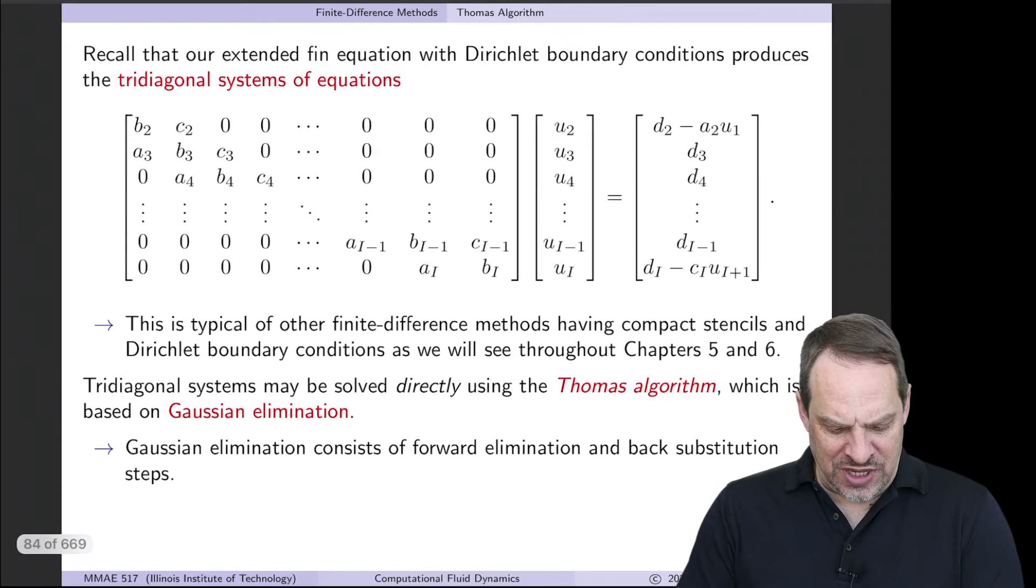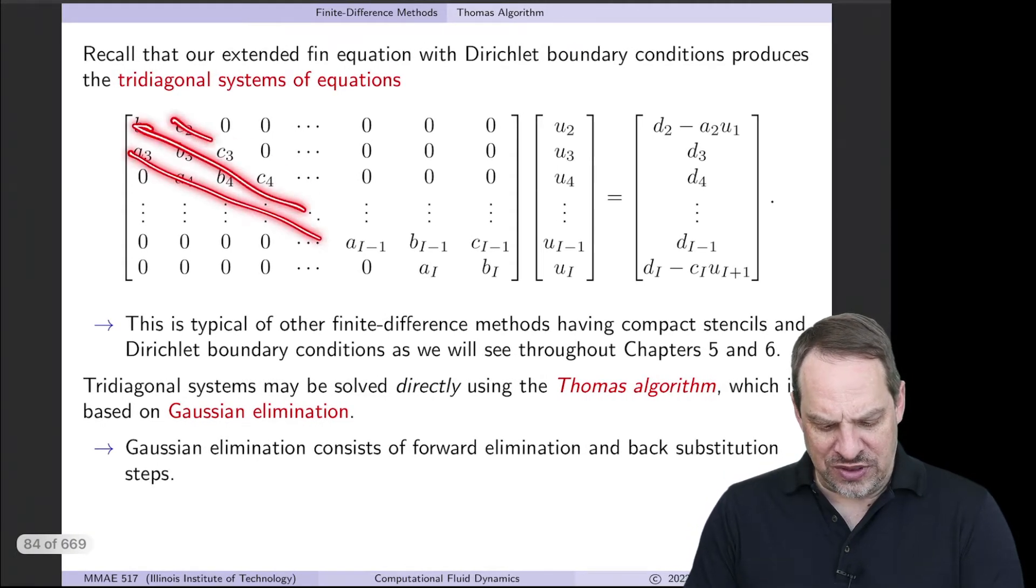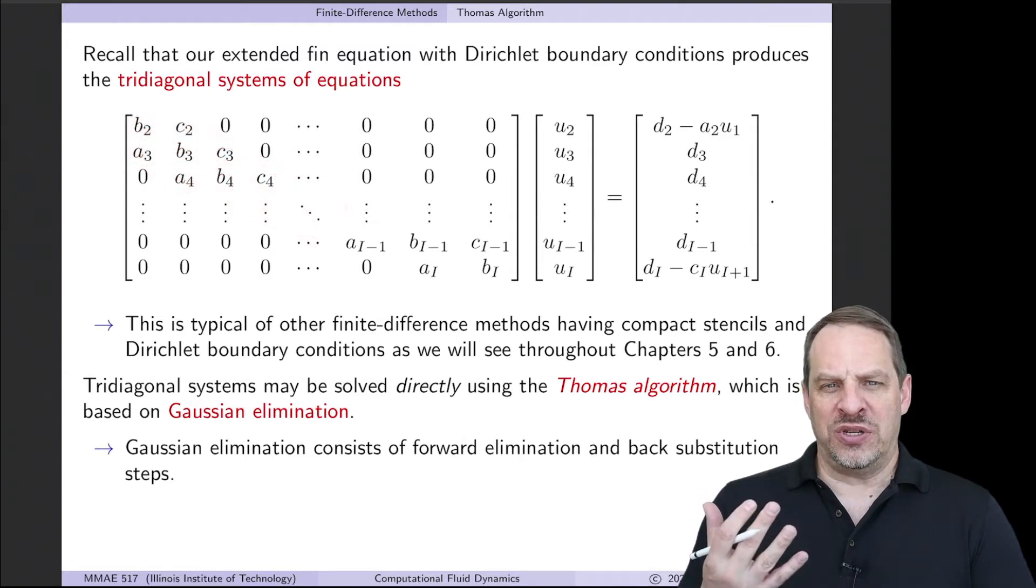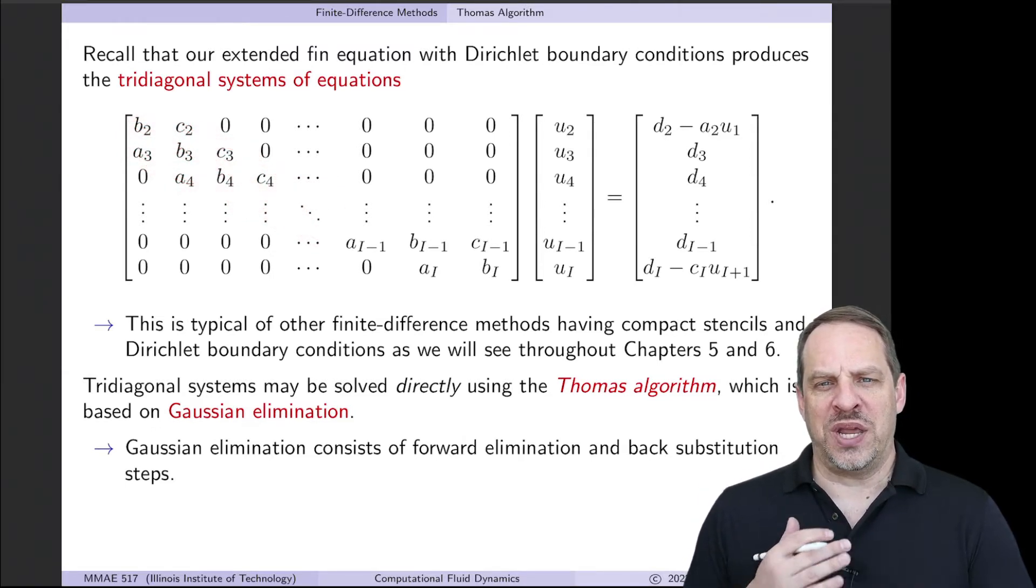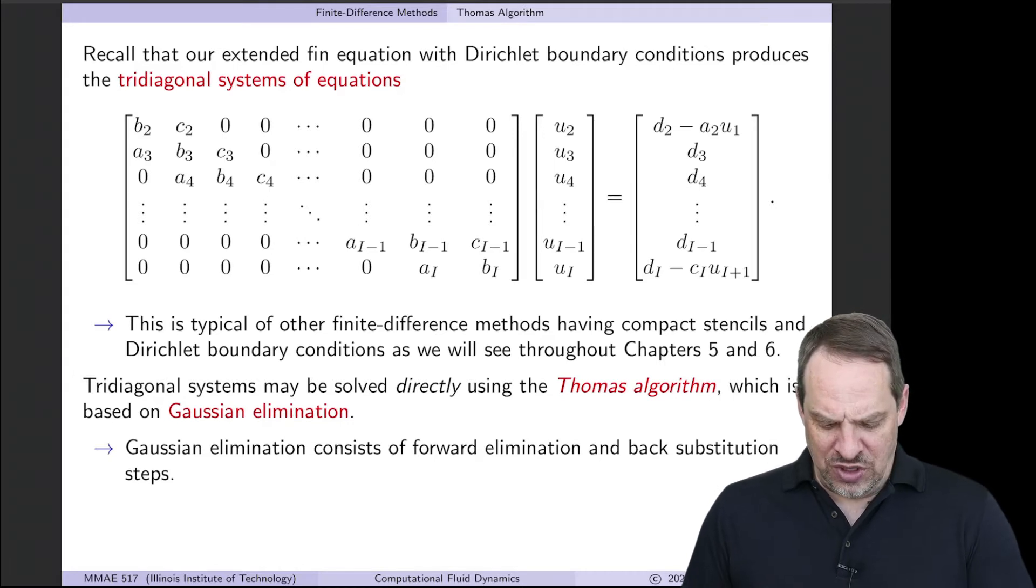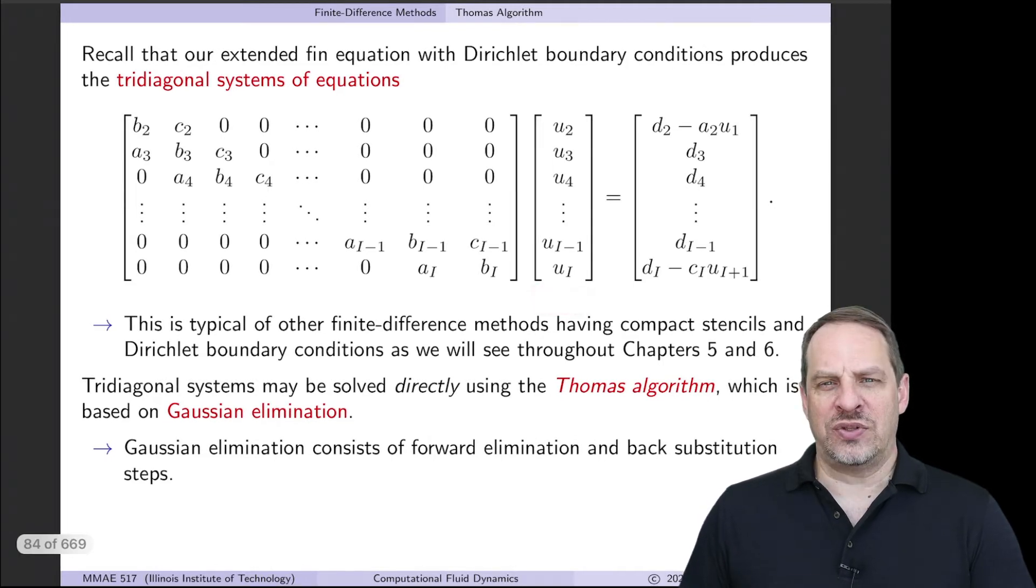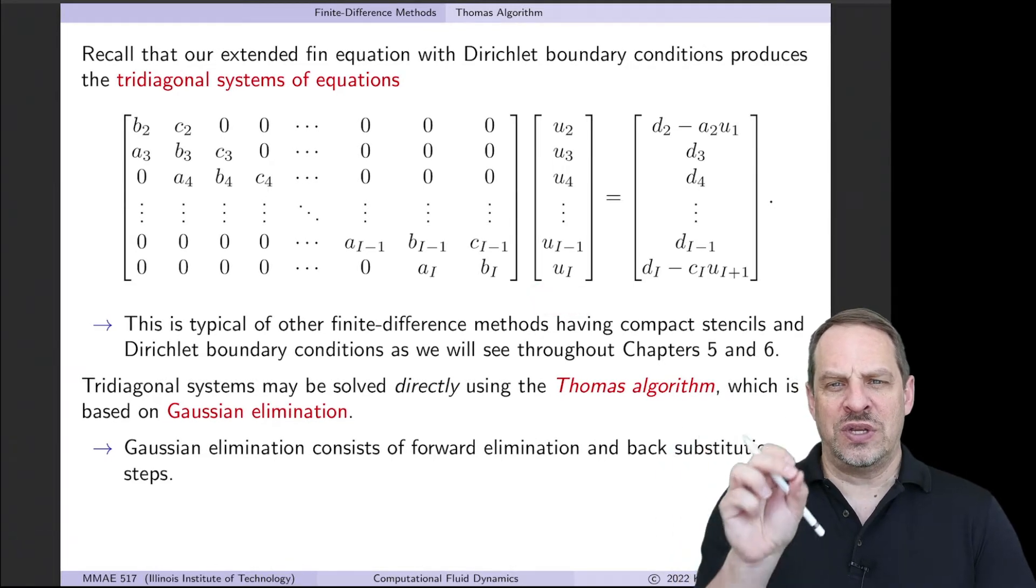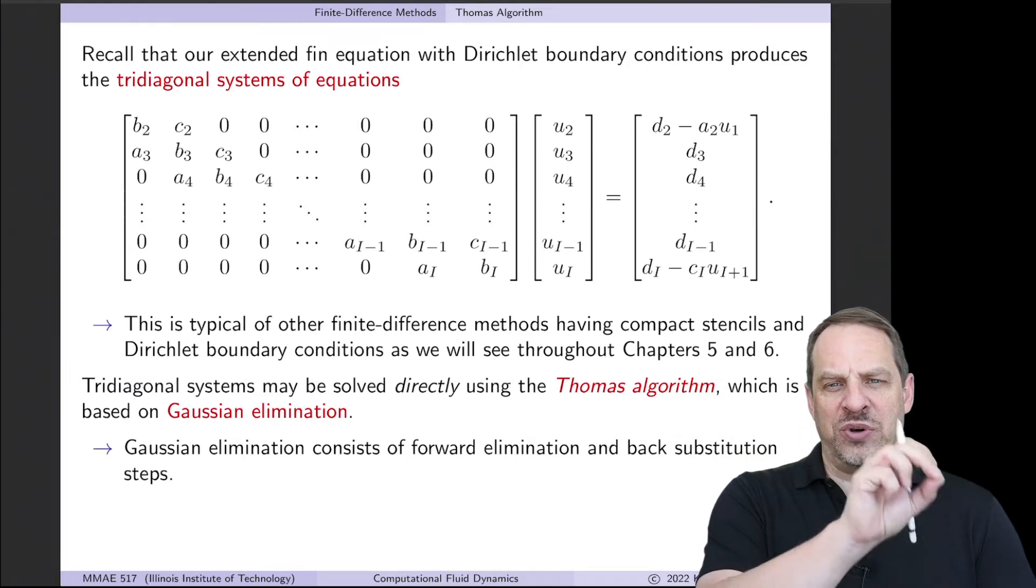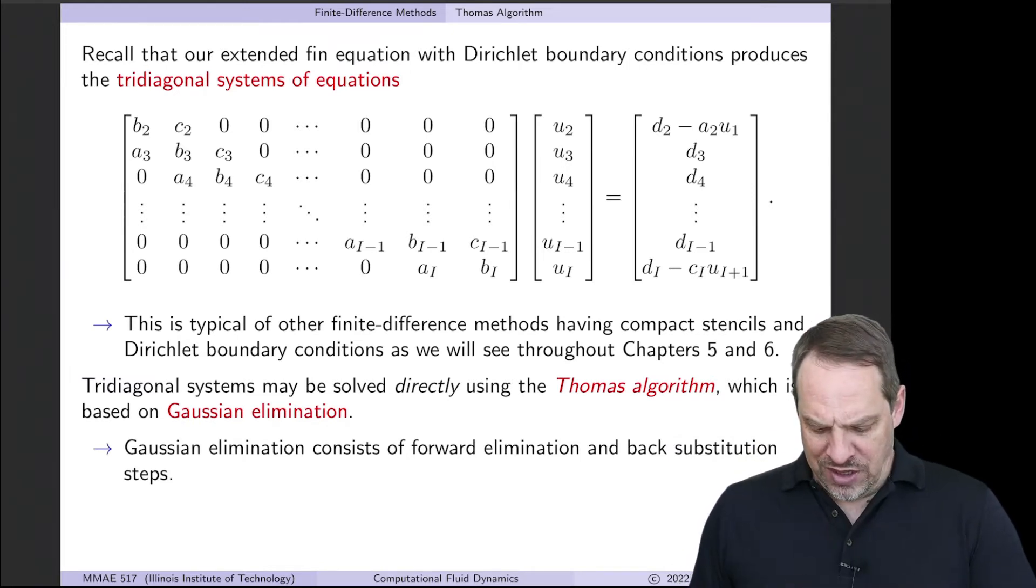So we have the A's, the B's, and the C's, which can all now be different down the lower, main, and upper diagonals of our tridiagonal matrix. We have the unknown U values, those are the solution values at each of the discrete grid points in the domain. And then we have the right-hand side values, the D's.